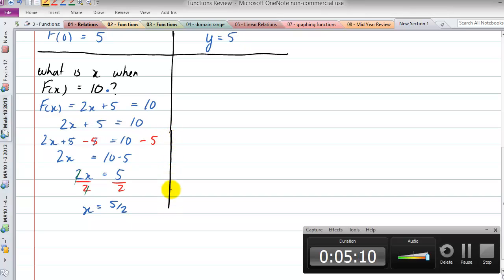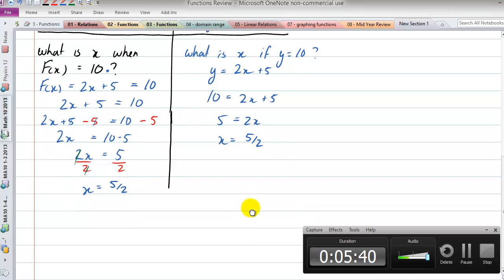And likewise if we look at that in terms of a two-variable equation, that's like saying what is x if y equals 10. So we say y equals 2x plus 5, so 10 equals 2x plus 5, 5 equals 2x, x equals 5 over 2. So similar thing. Alright, so that's kind of how function notation works.